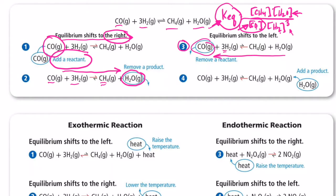Another way to shift it left is by adding product. If I add a gaseous product, I need to get rid of it — that's a stress on the system. To consume the extra H₂O I've added, it needs to shift left to make more reactants. That means the methane concentration would go down and the reactant concentrations would go up, all proportionally so that the equilibrium constant does not change.